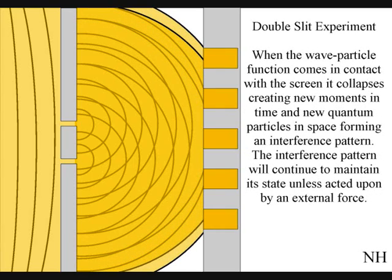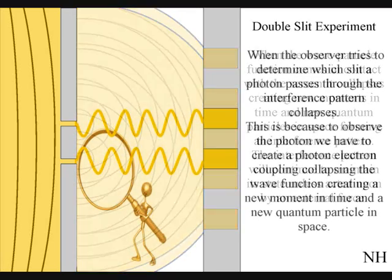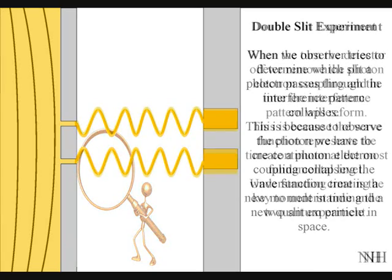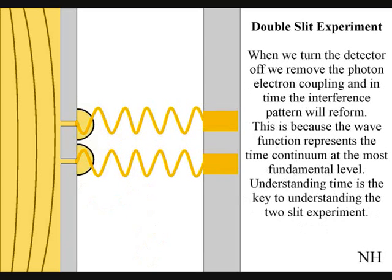We can see in the two-slit experiment that it is only when a detector is turned on that the interference pattern collapses. In other words, only when light comes into physical contact with something does it collapse into photons or particles. When a detector is turned off, the interference pattern will reform.